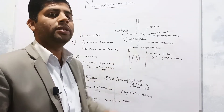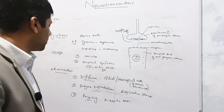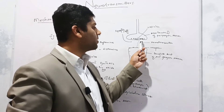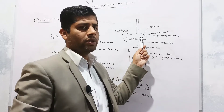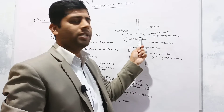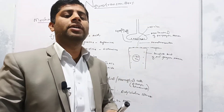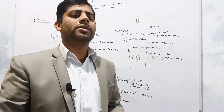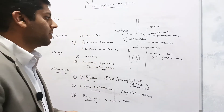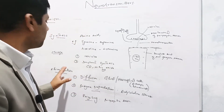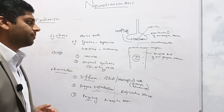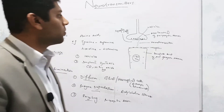The third elimination method is recycling: the axon terminal of the pre-synaptic neuron re-captures and re-accumulates these neurotransmitters back into vesicles, making them available for the next nerve impulse conduction. These were the three important phases of neurotransmitters: synthesis, storage, and elimination.